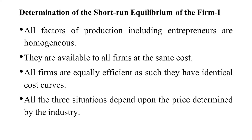In short-run equilibrium, we generally believe that all factors of production including the entrepreneur are homogeneous. They are available to all firms at the same cost — this is possible in perfect competition, where all firms are equally efficient and have identical cost curves. All three situations — super normal profit, normal profit, and loss — depend upon the price determined by the industry.